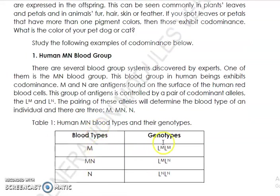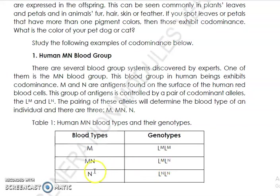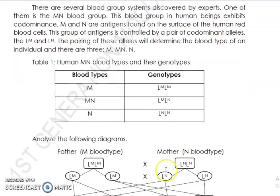Let's look at the table directly. The first column shows blood types — referring to the physical appearance, the phenotypes. The second column shows genotypes. If the blood type is M, the genotype is LM LM. If the blood type is MN, the genotype is LM LN. And if the blood type is N, the genotype is LN LN.